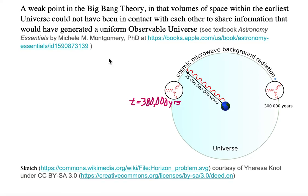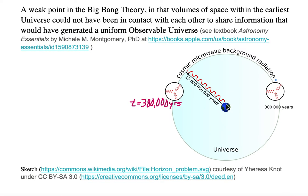Here we have a sketch of the Earth, and in a sphere surrounding the Earth is the cosmic microwave background radiation. Now this radiation left the cosmic microwave background at a time when the universe was 380,000 years old.